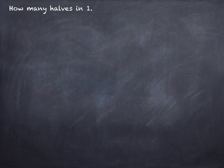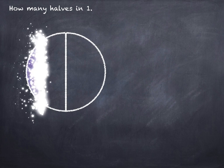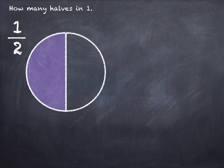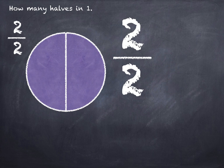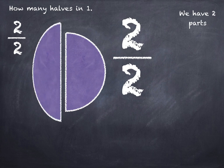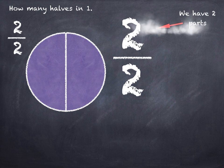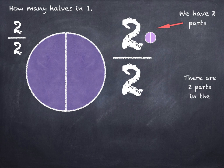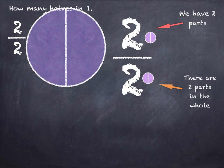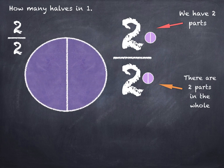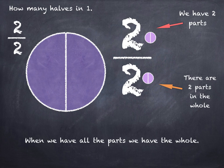How many halves in one? One half. Two halves. There are two halves in one. The top number of the fraction tells us we have two parts, and the bottom number of the fraction tells us there are two parts in the whole. When we have all the parts we have the whole. When we have all the parts we have one.